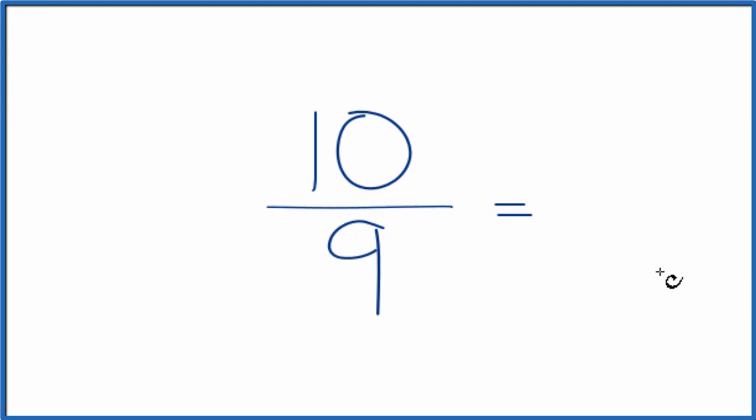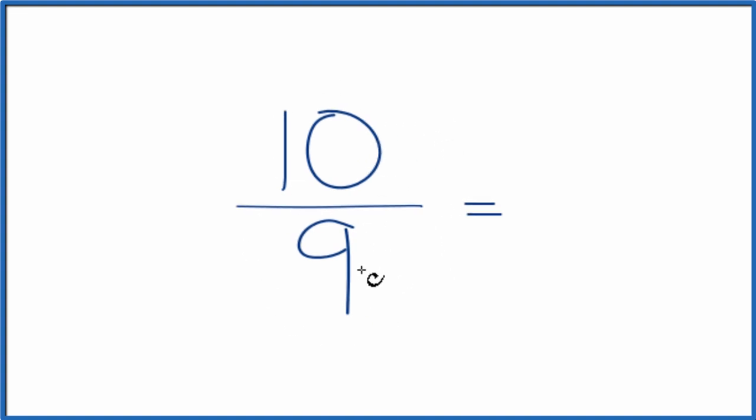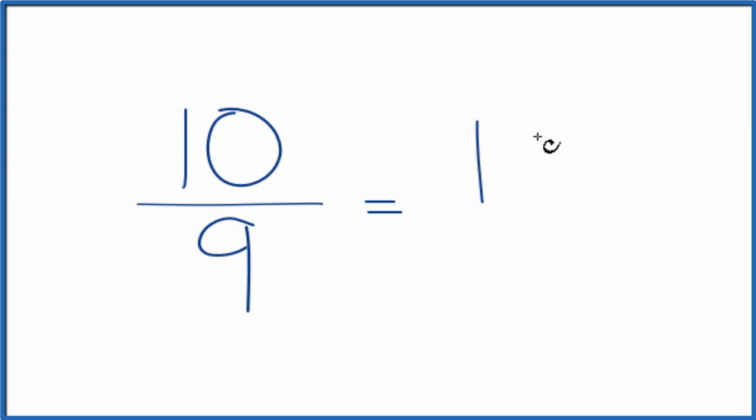And to do that, we need to find a common factor, something that goes into 10 and 9 evenly. The thing is, the only number that will go into 10 and 9 is 1. Divide 10 by 1, you get 10. Divide 9 by 1, you get 9. And that's what we started with.